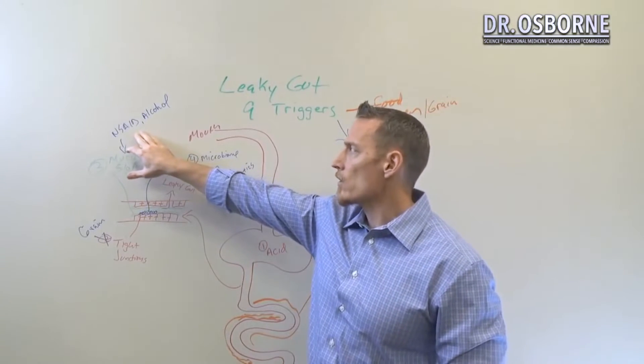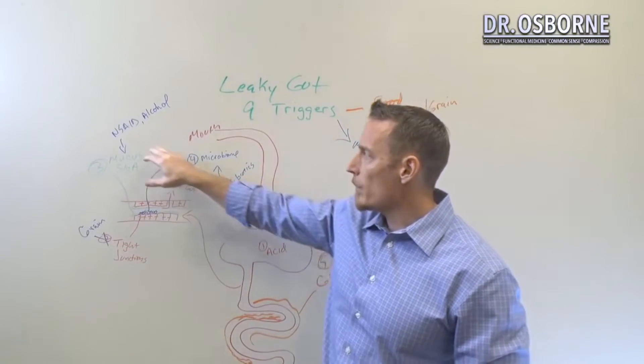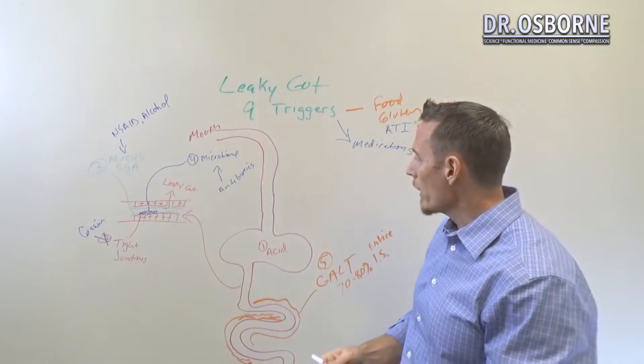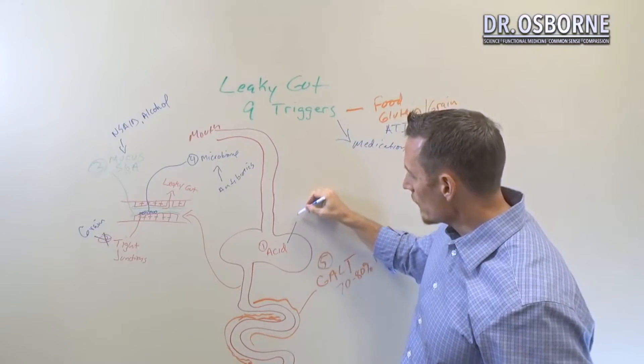Back to the medication. So we've got antibiotics very common, non-steroidal anti-inflammatory, alcohol. But what else in medication? What about antacids? So if you're taking Tums or Rolaids